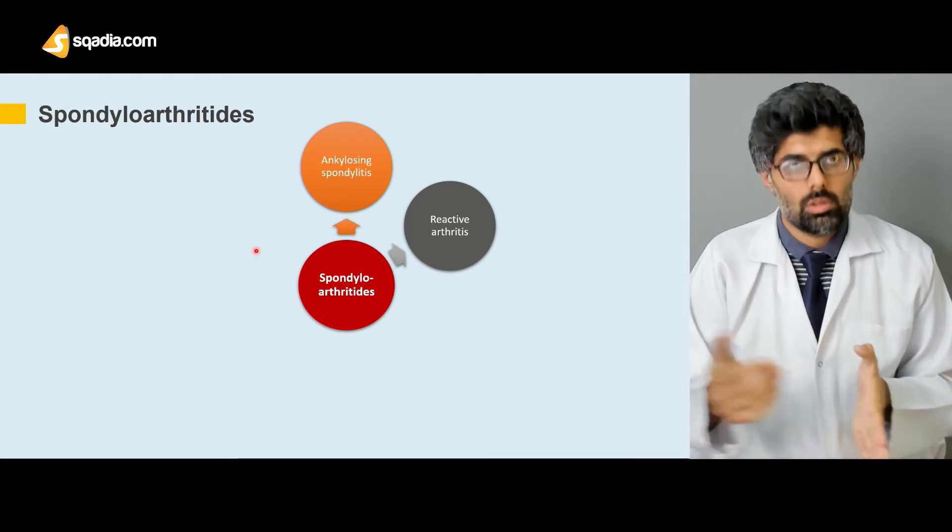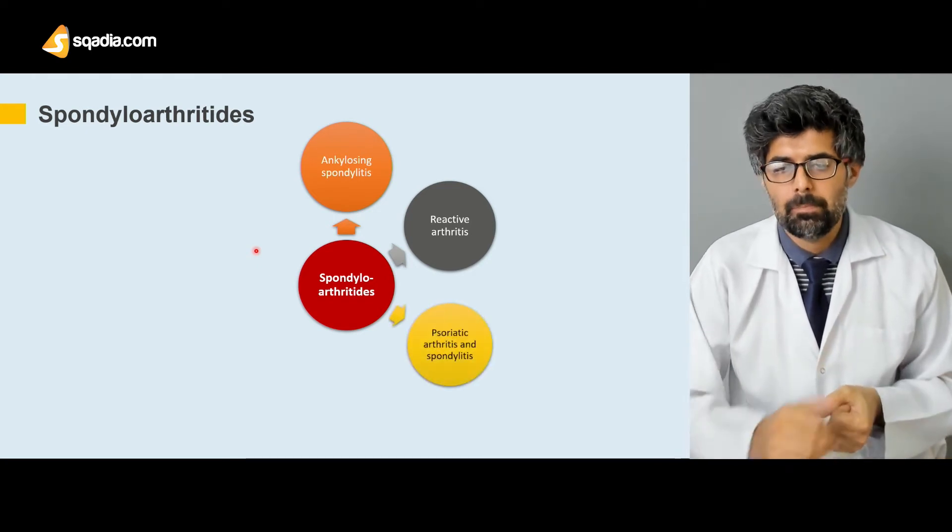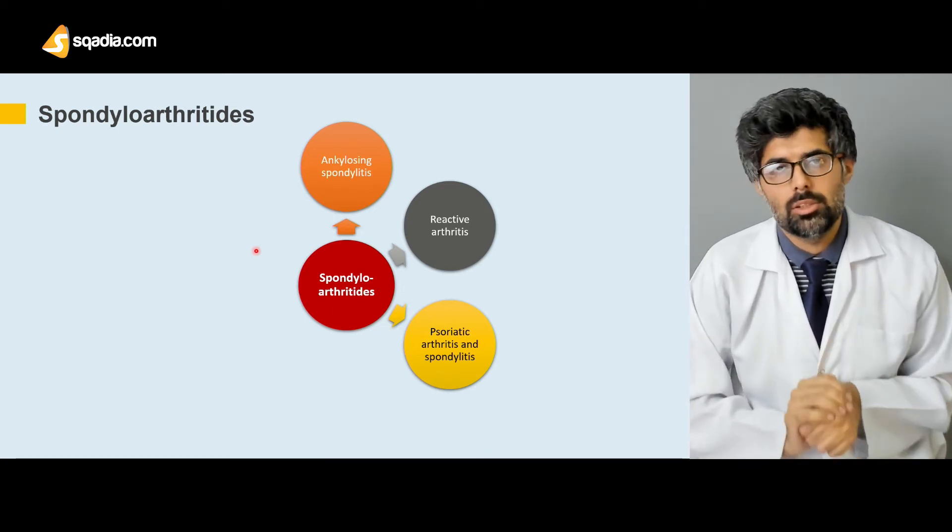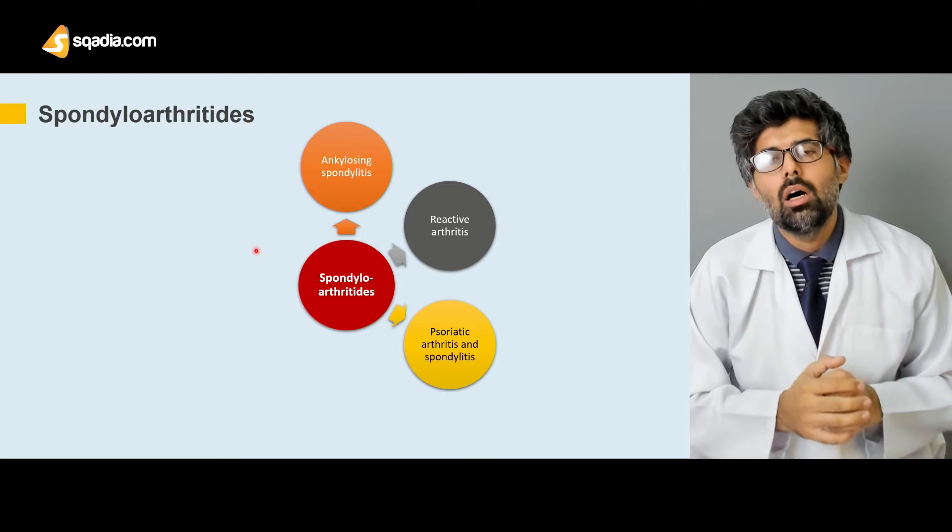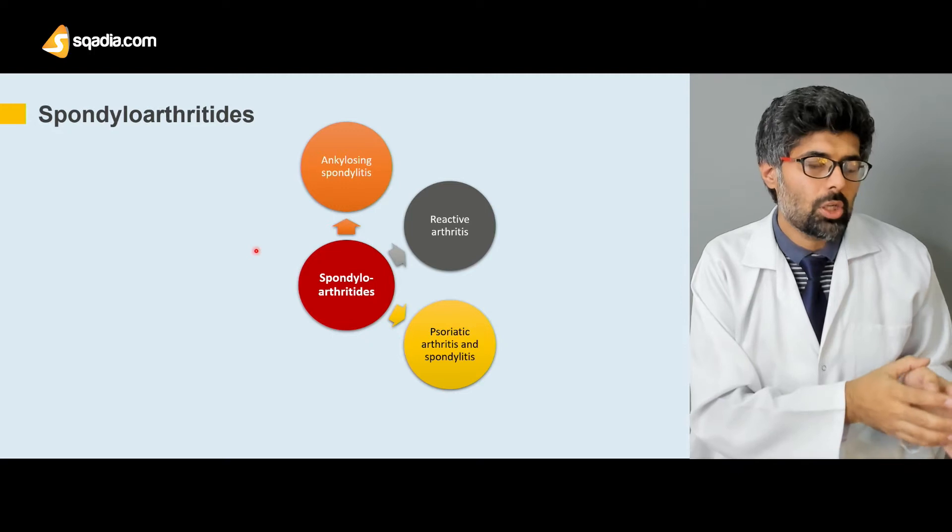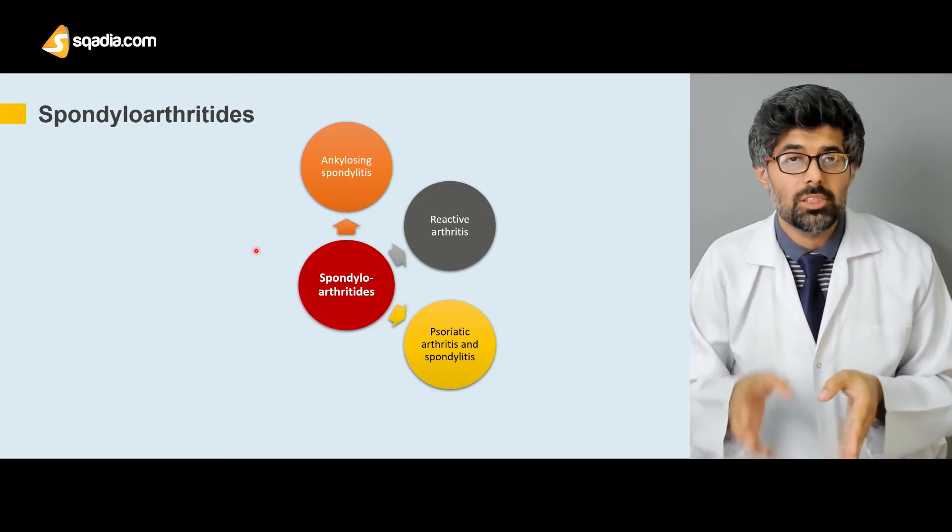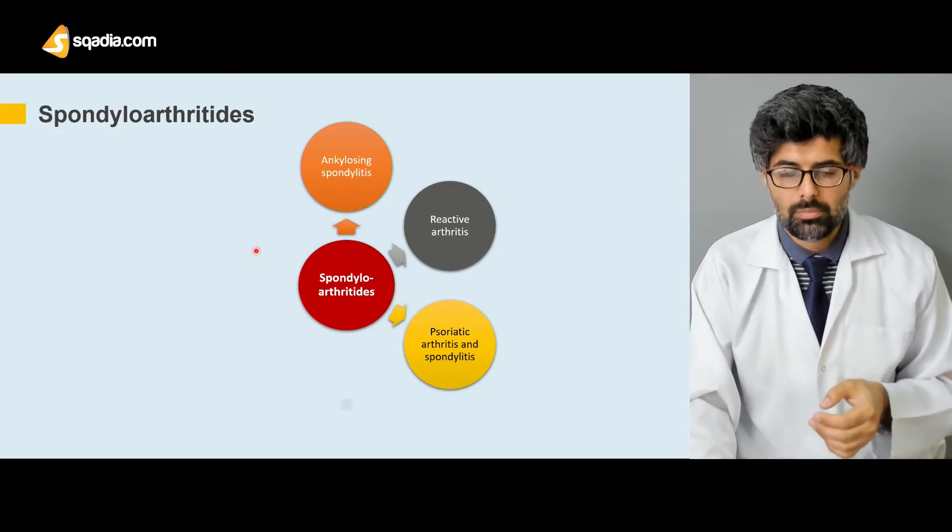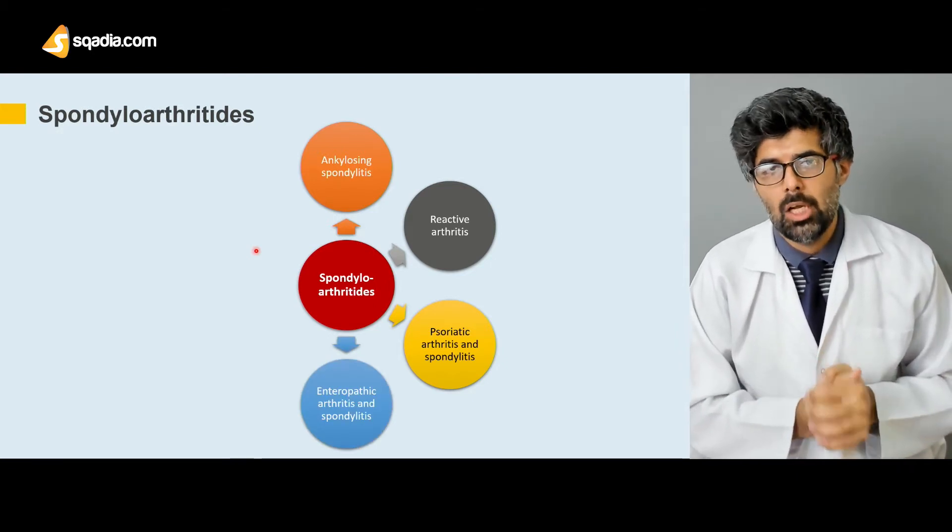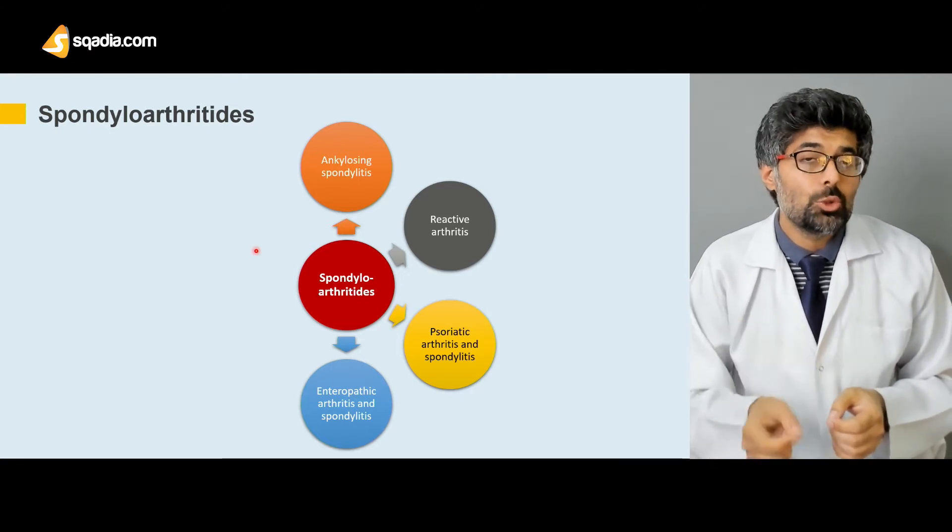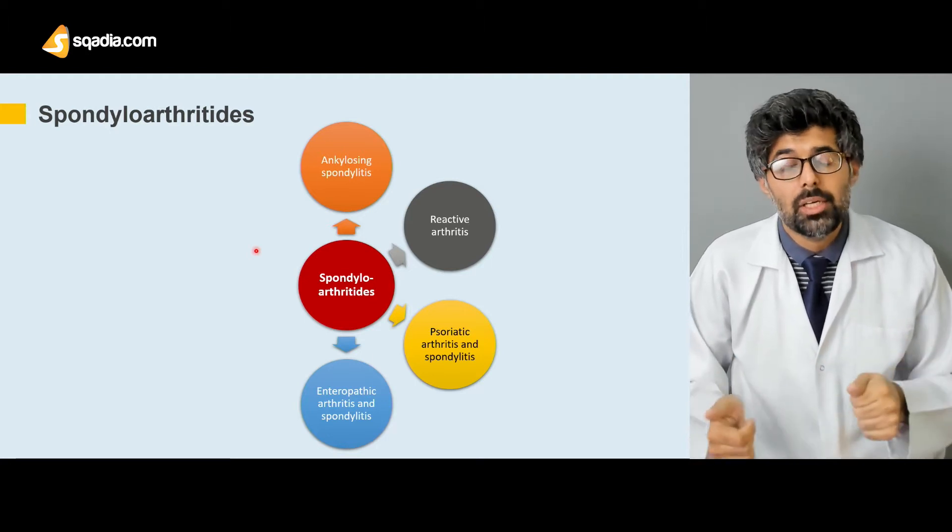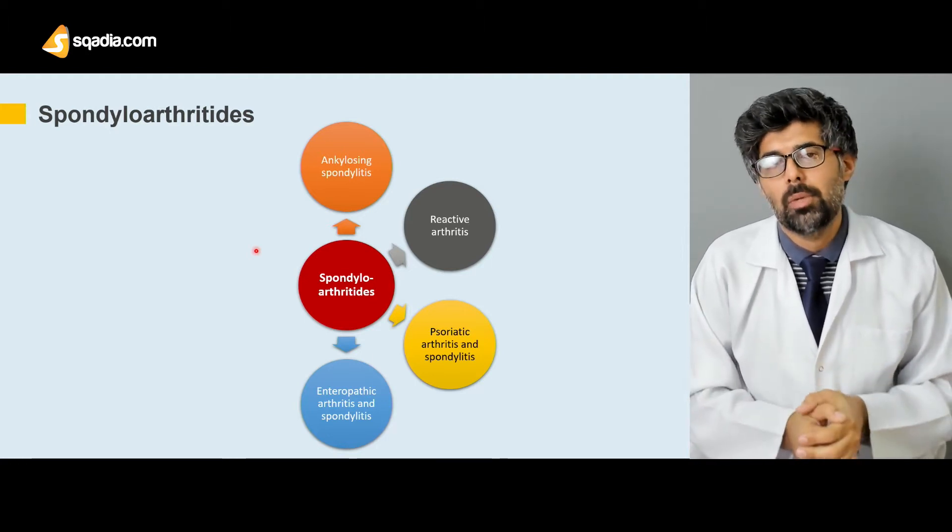Next are the psoriatic arthritis and spondylitis, or simply psoriatic spondyloarthritis. This one is spondyloarthritis which is associated with psoriasis in patients. Next is the enteropathic arthritis and spondyloarthritis. This is a specific one which is usually associated with patients with both arthritis, spondylitis, and some kind of inflammatory bowel disease.